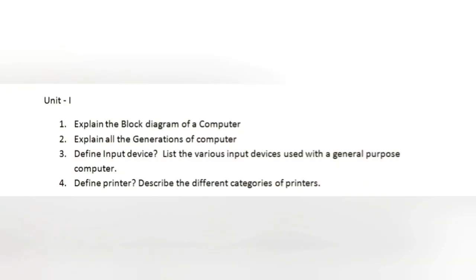First question: explain the block diagram of a computer. First define the computer, then draw the diagram, then explain about input devices and output devices and the CPU. Question number two: explain all the generations of computers — there are five generations total that we have to explain.